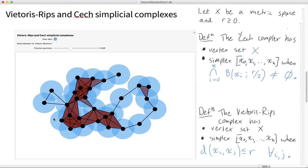Both are important in theory, both are important in computations, both are computable, but I would say a first approximation would be the Čech complex is used more in theory and the Vietoris-Rips complex is used more in computations.